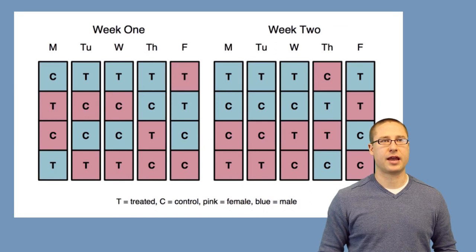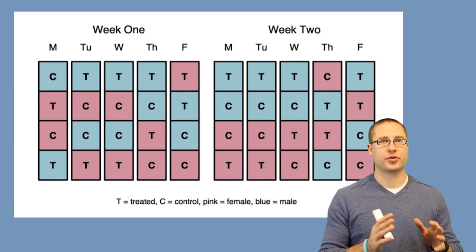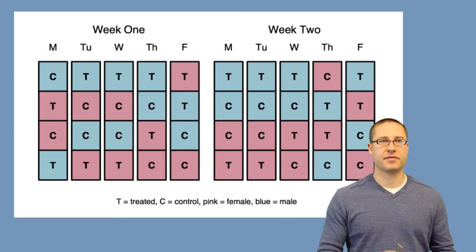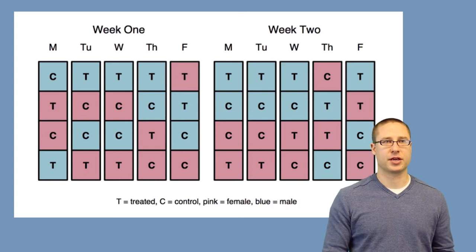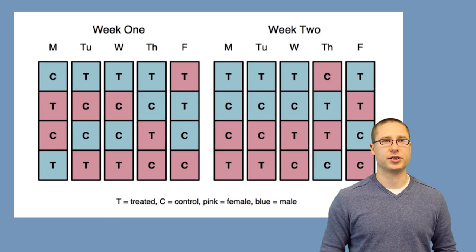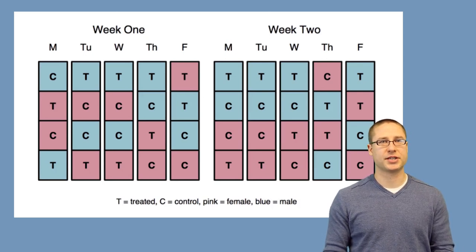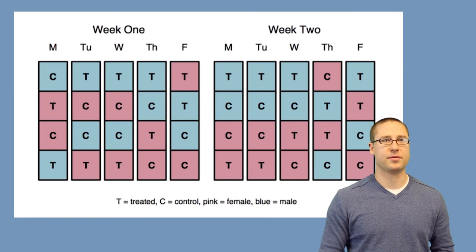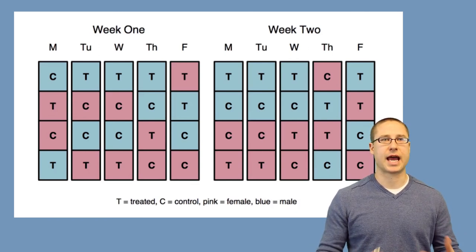A stratified design, on the other hand, would run both treated and controls in both week one and week two. You would make some of the treated be males and some be females, and similarly some of the controls be males and females across both weeks. When we balance out the variables this way — since we knew the potential confounders, the date and the sex of the mice — we are able to design the experiment around these confounders and estimate their effects independently of each other.